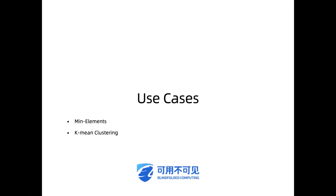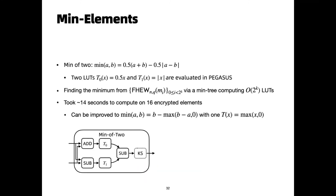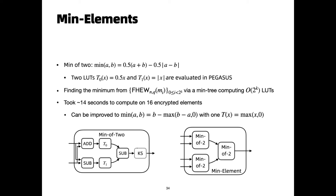We now present two use cases of Pegasus. The first one is to compute the minimum value in an encrypted array. The basic block is to find the minimum of two values. In our experiments, we use an absolute value formula. Since homomorphic addition and subtraction are supported by the FHEW scheme, this formula needs two lookup tables to evaluate. Then by stacking this basic block into a binary tree, we can find the minimum encrypted value. On our testbed, finding the minimum from 16 encrypted values took about 14 seconds.